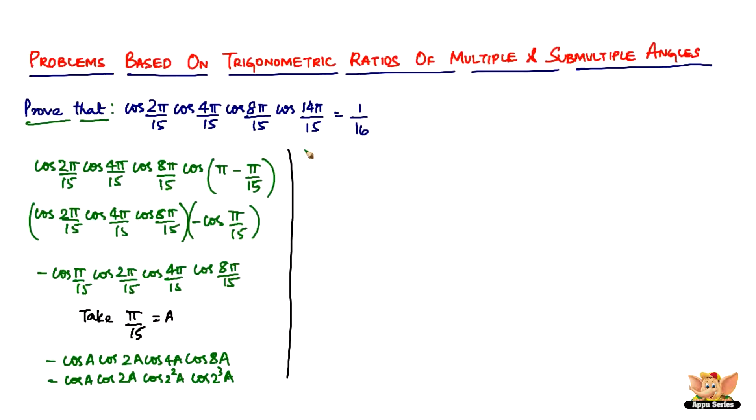So now what we can do next is, as we know from the formula that we did in the previous video, let me rewrite that for you again. Here it is: cos a cos 2a cos 2 square a cos 2 cube a and so on up till cos 2 to the power n minus 1 into a equals sine of 2 to the power n a divided by 2 to the power n sine a.